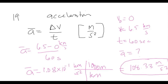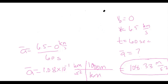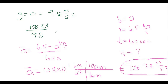The second part asks for the acceleration in terms of G's. One G equals 9.8 meters per second squared — the acceleration due to gravity on Earth. So 108.33 divided by 9.8 gives approximately 11 G's. If you were riding this missile as it accelerates, you would experience about 11 G's of force — which is pretty intense, like an extreme roller coaster.